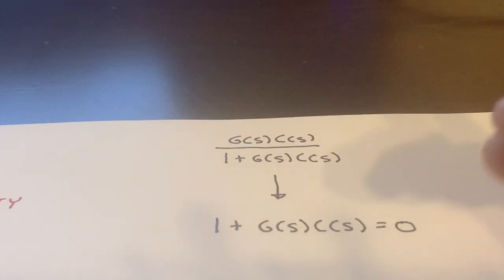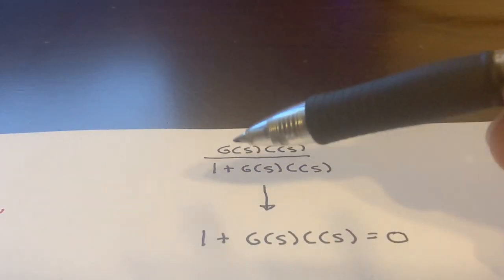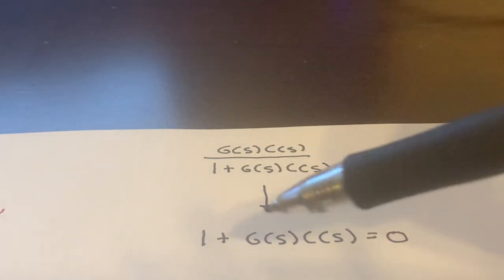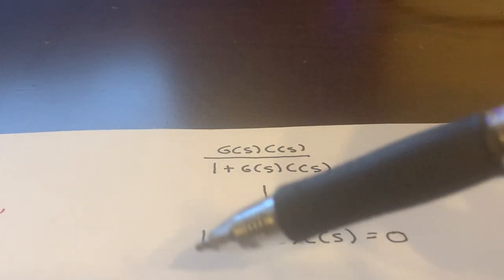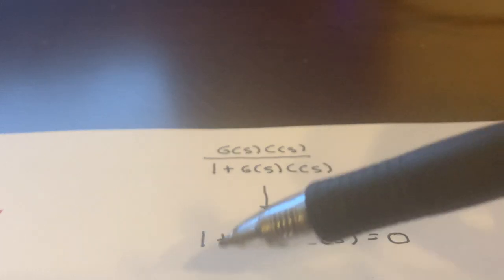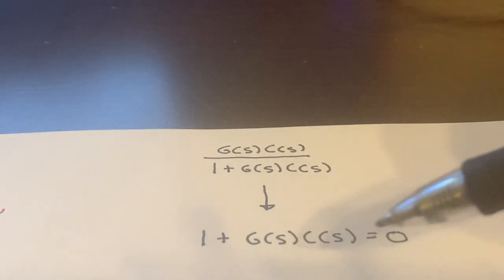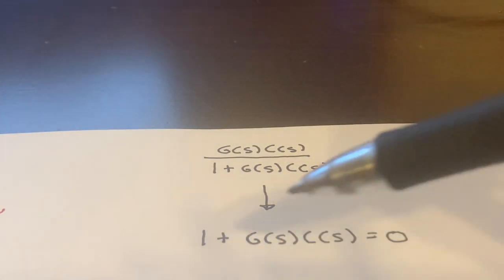And so again, if I have GC over one plus GC, that means to determine the stability of this equation, I'm just simply solving the equation one plus G of S, C of S is equal to zero. And that's what I did in the lecture.